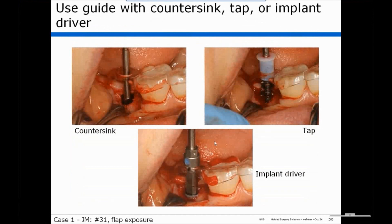With this system, you can also use the countersink, tap, and implant driver. In the top left panel, the countersink is centered in the guide hole to countersink the osteotomy. In the top right, the drill stop fits the tap, which is being used centered in the guide hole. In the bottom panel, the implant driver is centered in the guide hole to place the implant. As we'll see in a later case, this can be very critical, because in type III or type IV bone, self-tapping implants can find their own way regardless of how the osteotomy was positioned.